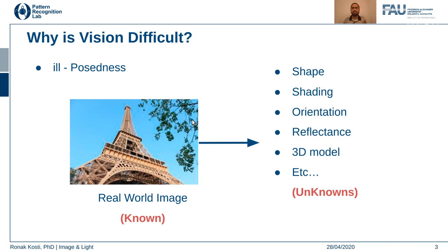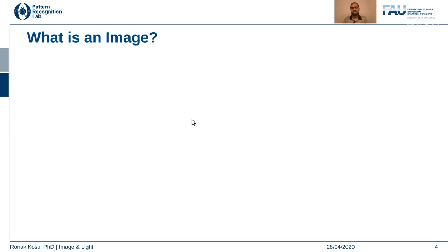This does not necessarily mean it will be like this every time. Before jumping into any computer vision problem, you have to study what aspects of the problem are available, what prior knowledge you already have, what assumptions you can make, what constraints need to be added — like physical and geometrical constraints — and then you will have a better understanding of exactly what unknowns you need to be inferring.